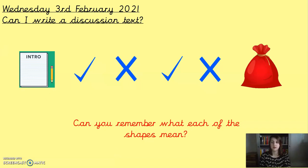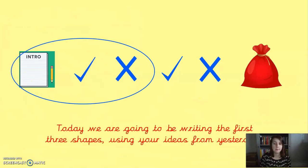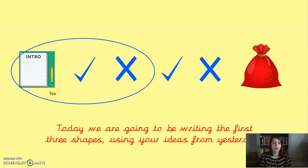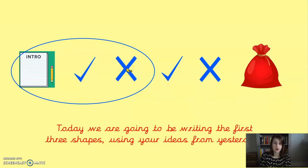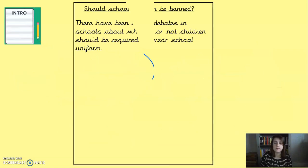Today we are only going to be writing part of our discussion text — the first three paragraphs. We're going to write the introduction to our discussion, one 'for' paragraph, and one 'against' paragraph. We're not going to write the whole thing, so it's going to be short little bursts of writing like we usually do in school.